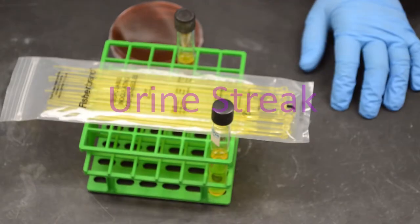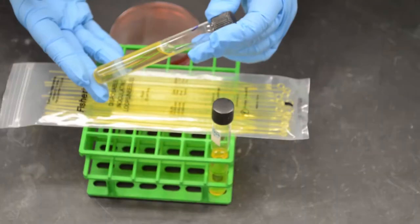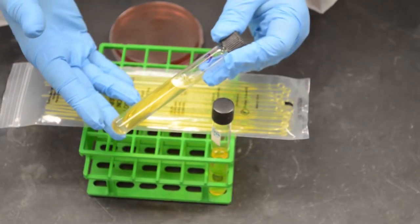The urine streak is a semi-quantitative method of determining an approximate number of bacterial cells in a fluid.